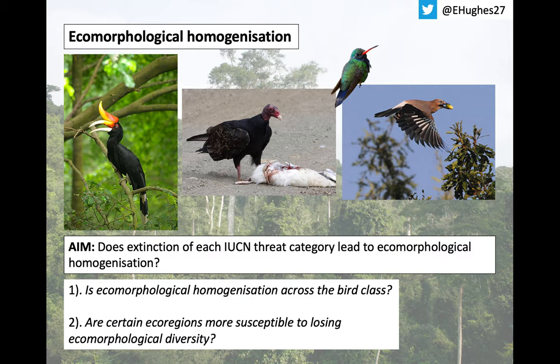Here, I assess whether the extinction of each IUCN threat category leads to ecomorphological homogenisation, and look at two key questions: what does this look like globally across the whole bird class, and spatially, are certain ecoregions more susceptible to losing ecomorphological diversity than others?